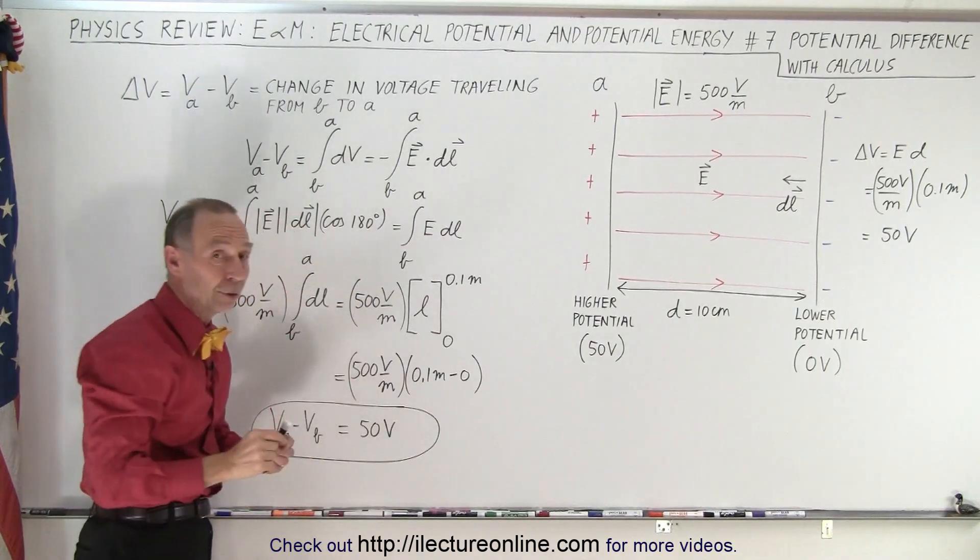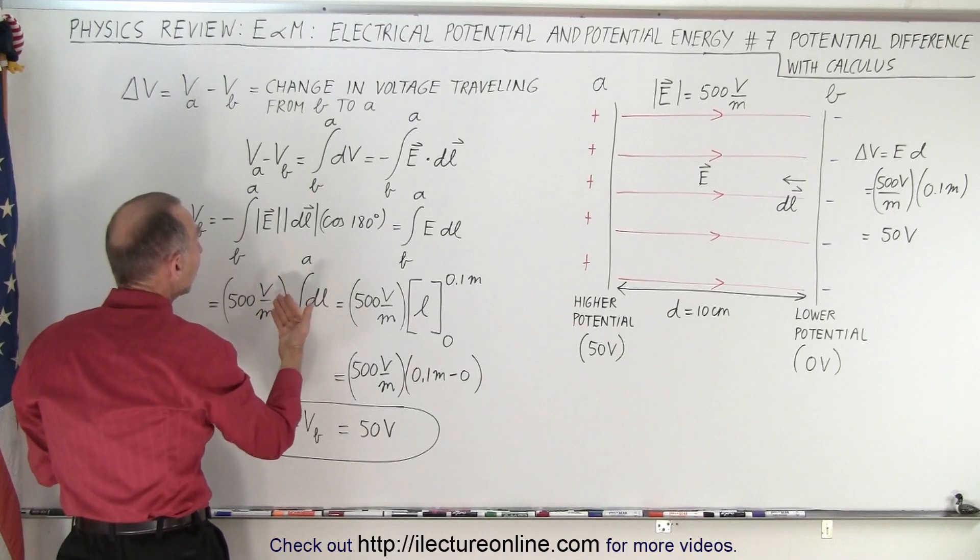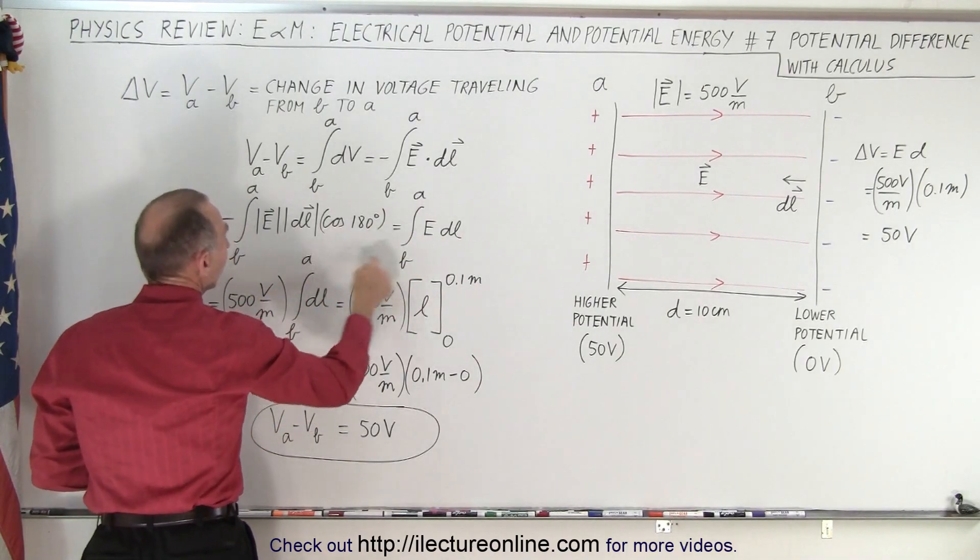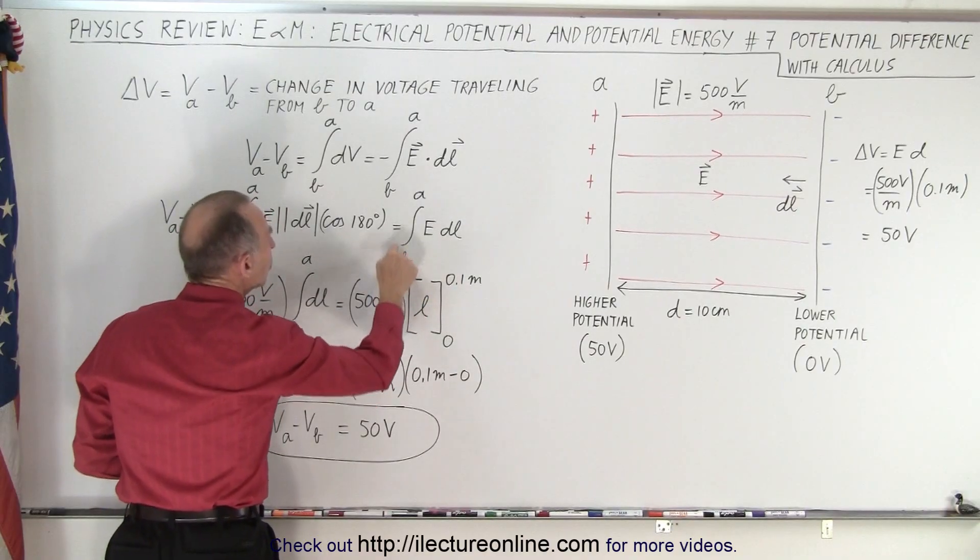But now the cosine of 180 degrees is a negative one, and a negative one times this negative one becomes positive, so that then becomes the integral of the magnitude of E times the magnitude of DL going from B to A.